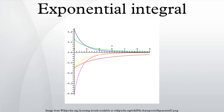For complex arguments off the negative real axis, this generalizes to, where γ is the Euler-Mascheroni constant.